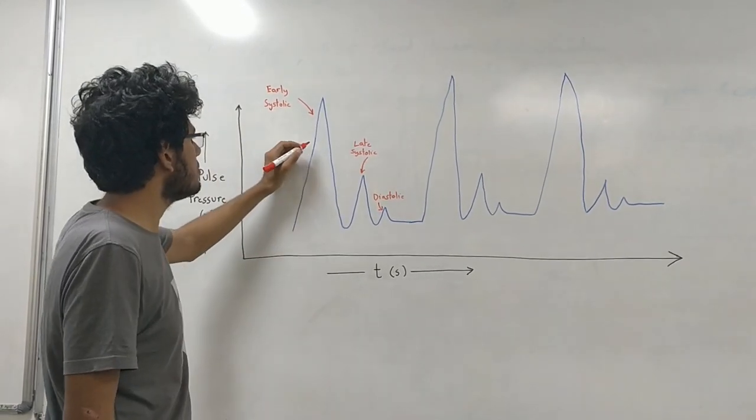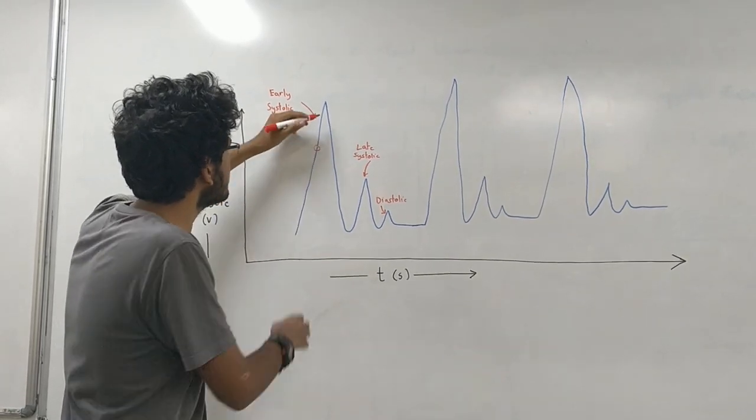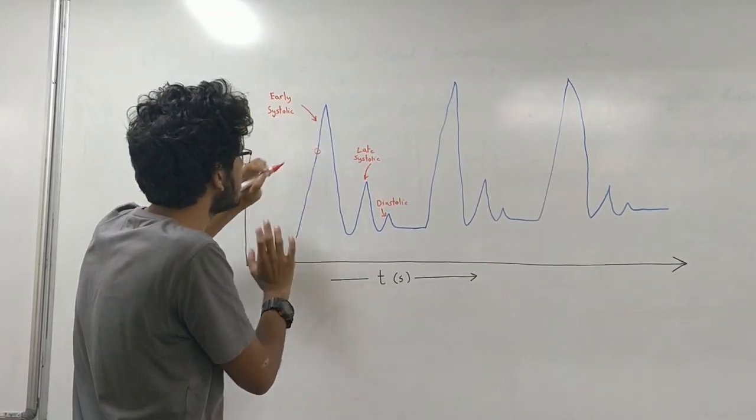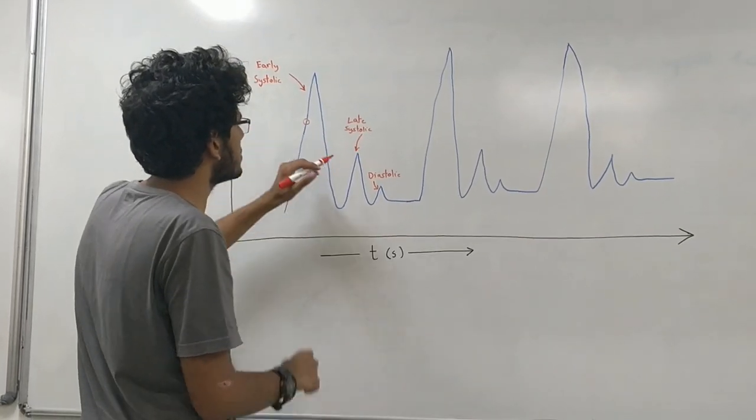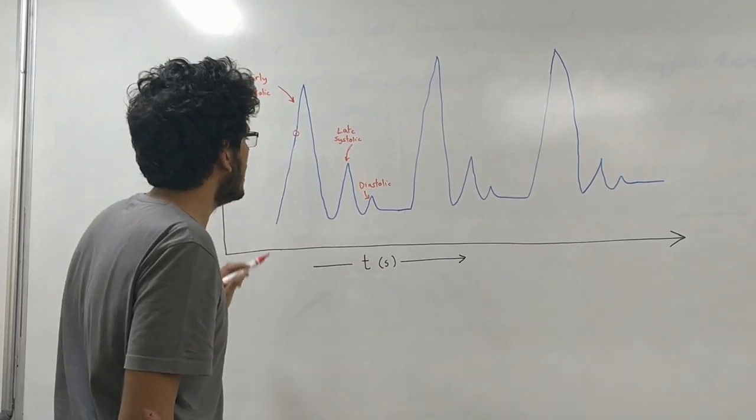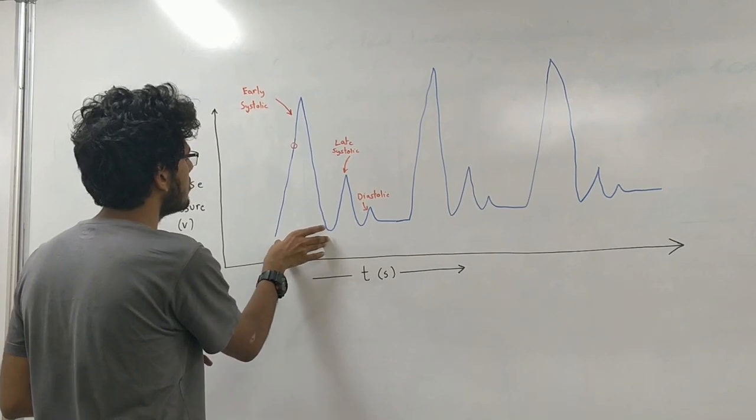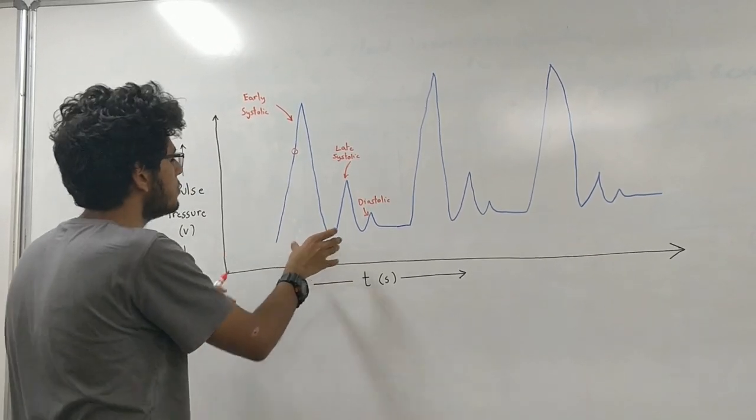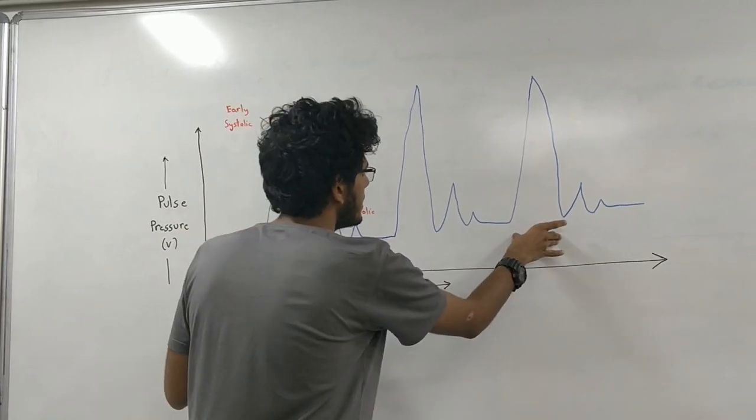That's why we use a threshold value over here so that even if the maximas shift, the threshold value does not shift. The threshold value is chosen such that it is much above the late systolic but much below the maxima. And using this, we calculate the time of one early systolic. And using the average of last 16 readings, it calculates the beats per minute.